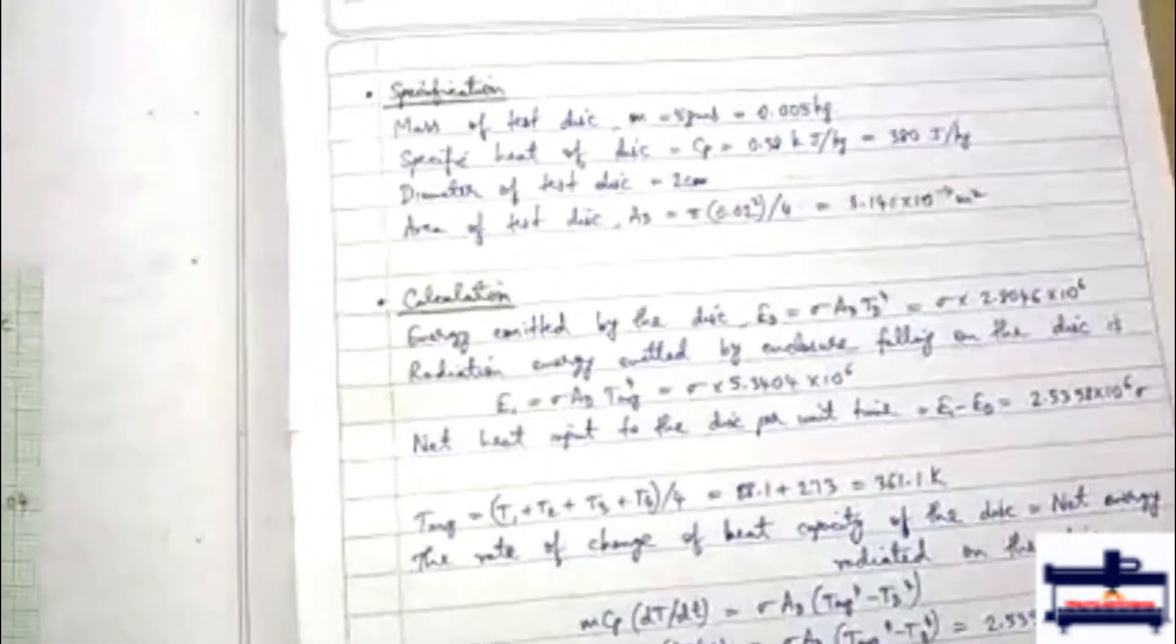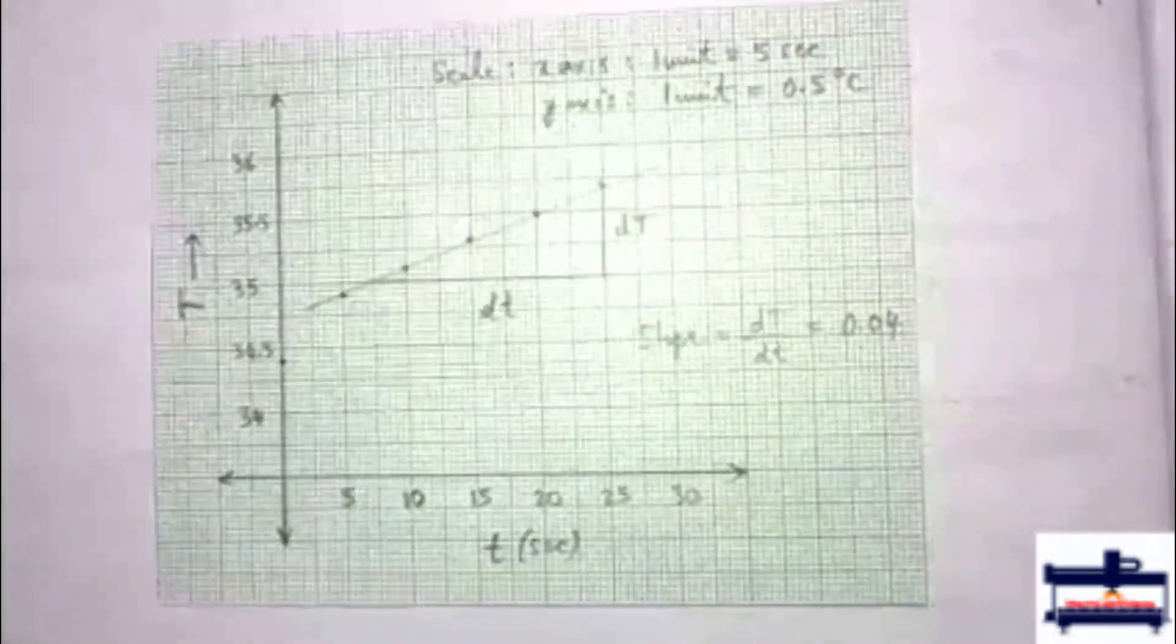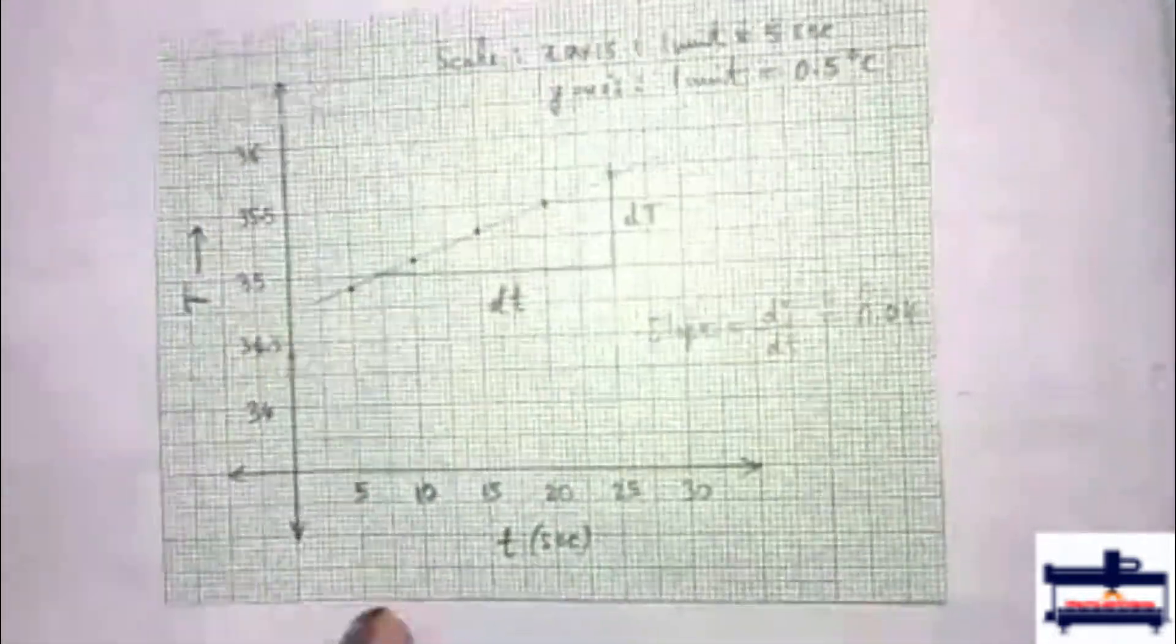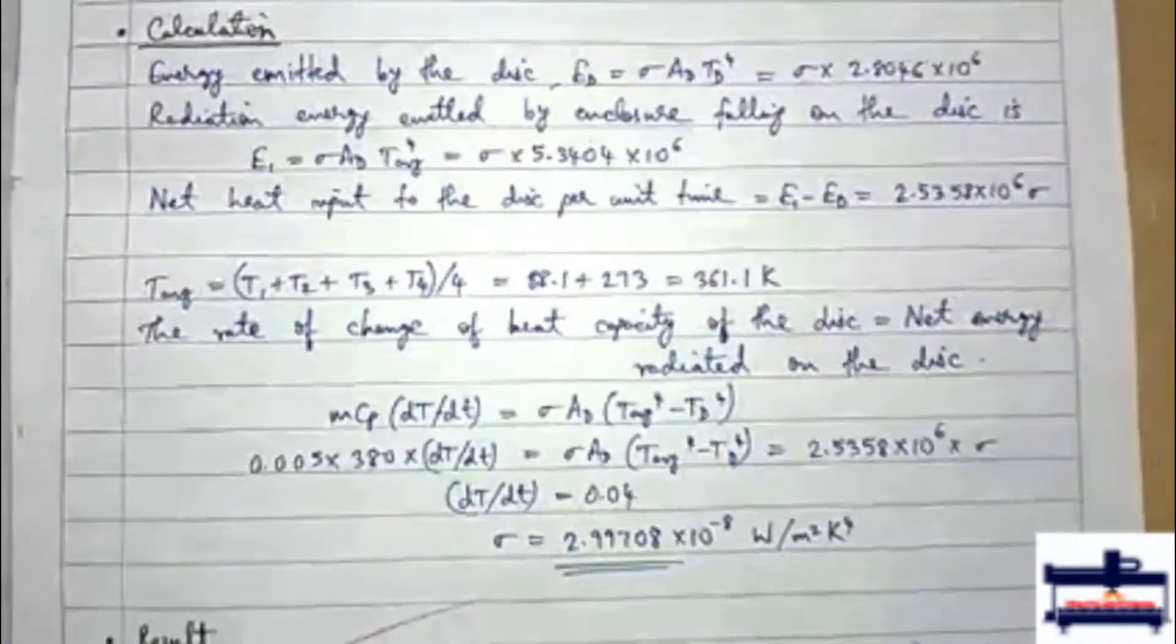After this the graph is plotted with temperature on the y-axis and time taken on the x-axis. This is for the temperature rise of the disk. And then the calculation for finding out Stefan Boltzmann constant.